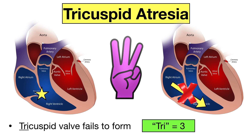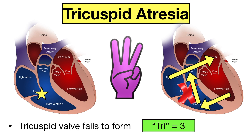Instead, there is an atrial septal defect — a hole — which allows blood to pass from the right atrium to the left atrium. The oxygen-poor blood from the right heart then mixes with the oxygen-rich blood in the left heart, leading to decreased oxygen levels in the blood going to the rest of the body and potential cyanosis. The right ventricle is typically underdeveloped, and a ventricular septal defect allows blood from the left ventricle to enter the right ventricle and pulmonary artery. Use three fingers to remember tricuspid atresia and how the tricuspid valve fails to form.